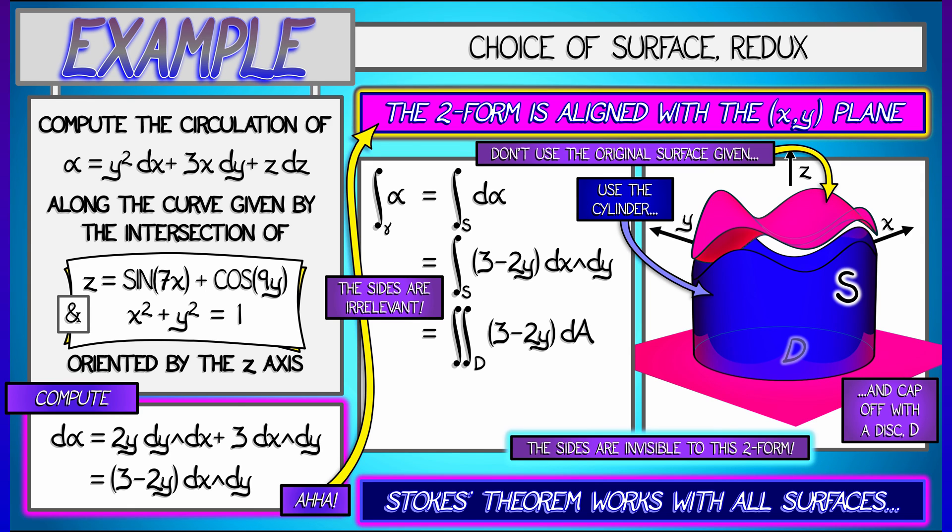So all I have to do is integrate over d, this disk parallel to the xy plane, and I'm integrating three minus two y with respect to area. Now that portion that is minus two y, aha, that is an odd function and I'm integrating over a symmetric domain.